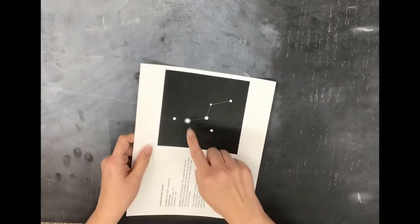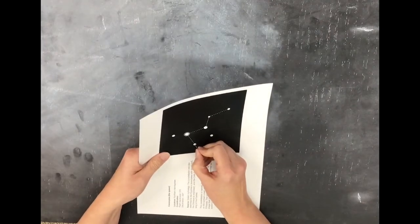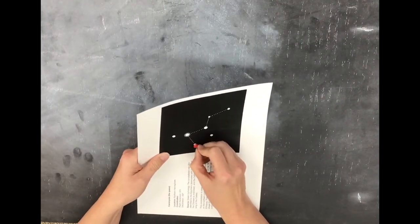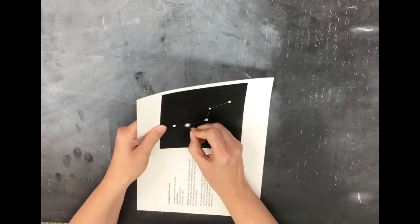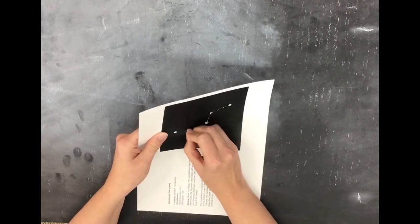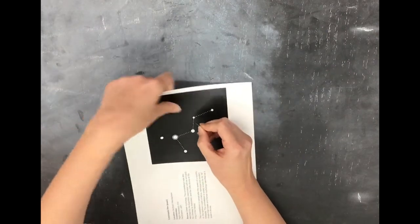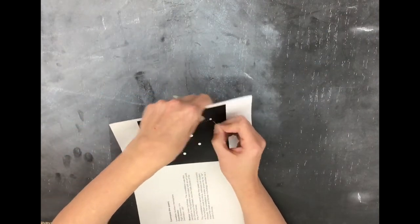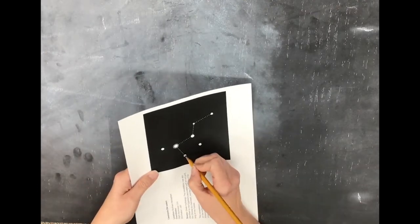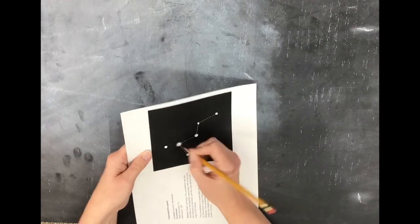Start by punching holes through the stars in the constellation you want to light up using a push pin. You can use a pencil to enlarge the holes slightly.